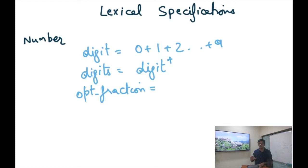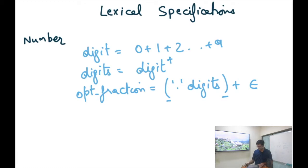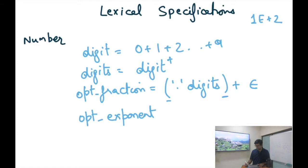There could be an optional fractional part — it may or may not be there. The fractional part begins with a dot followed by one or more digits. Because it's optional, I also want to say that the epsilon string is accepted by the optional fraction, meaning there was no fractional part. I'm putting parentheses for better readability, to clarify what is grouped with what.